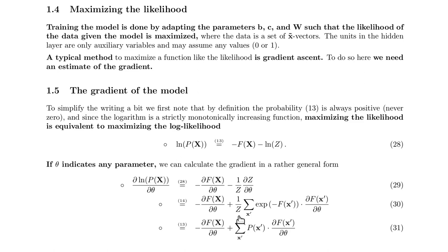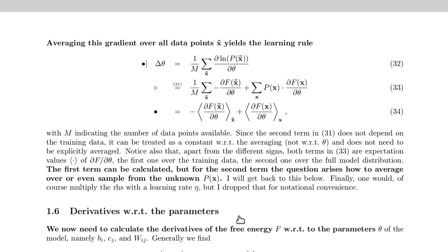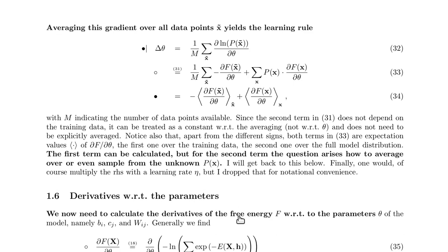This holds for any parameter we want to calculate the derivative for. So if we have this gradient, we can calculate a learning rule for the parameters by averaging over all the data points that we have. We take the gradient of our log likelihood with respect to our parameters, averaged over all data points. If we now plug in the gradient that we have just calculated, we get this expression.